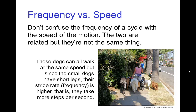In order to move at the same speed, the small dogs' stride rate has to be higher — they take more steps per second. Nevertheless, all the dogs are traveling at the same speed. This emphasizes the distinction between frequency of a cycle and the speed of the motion.